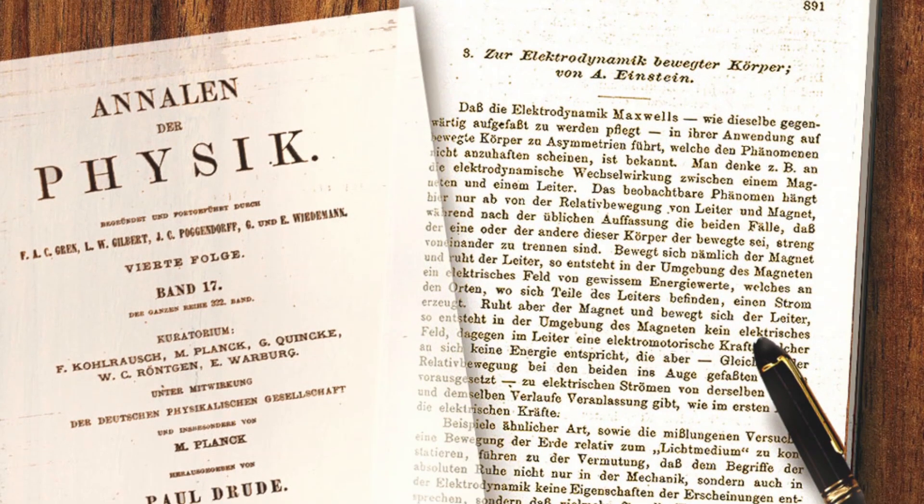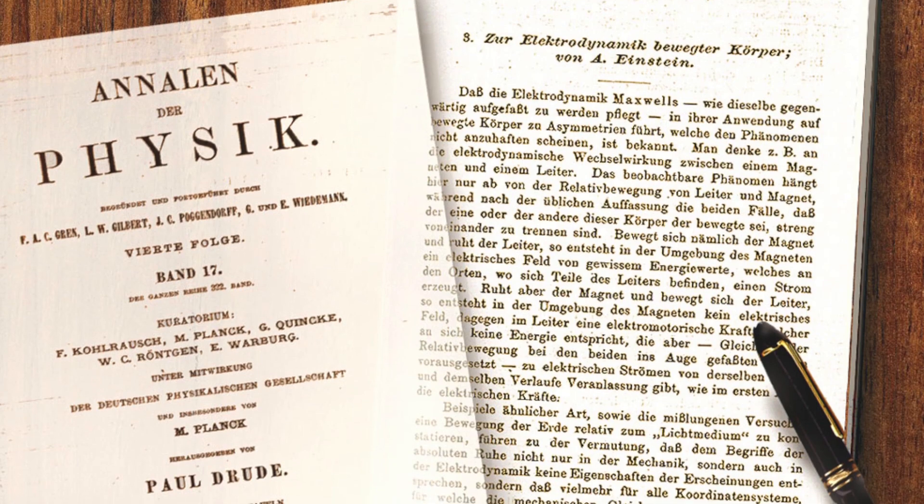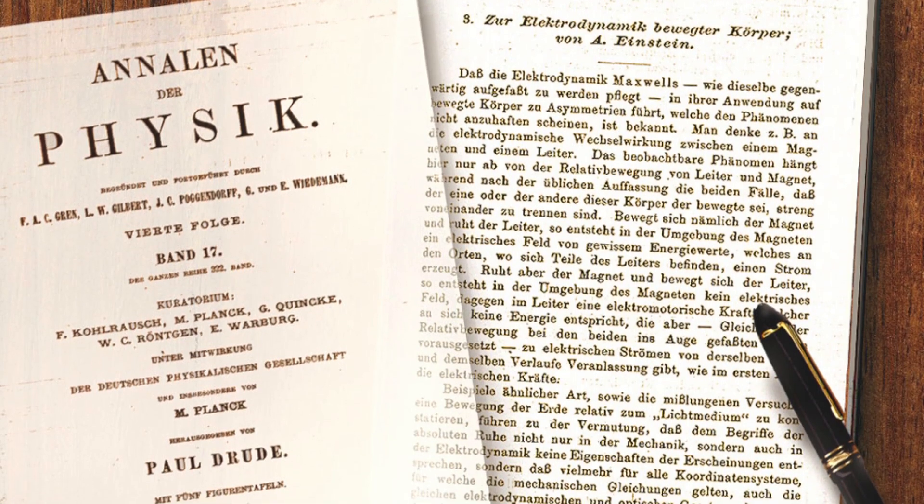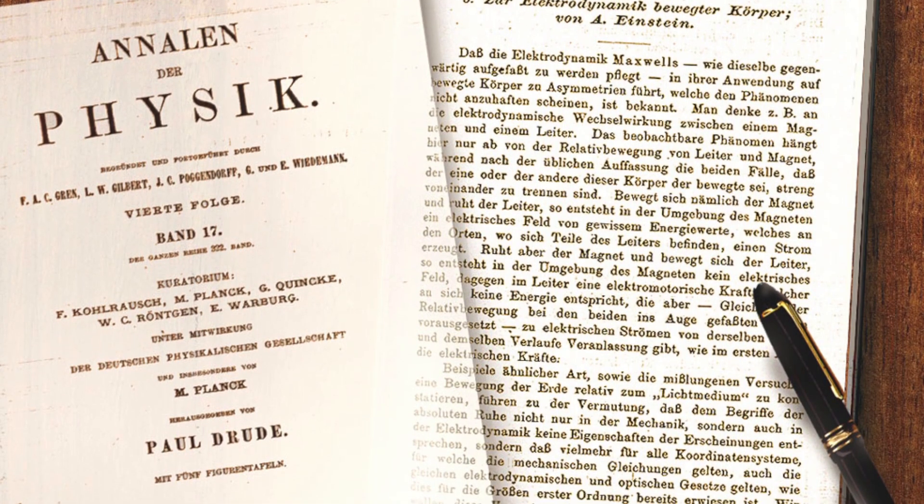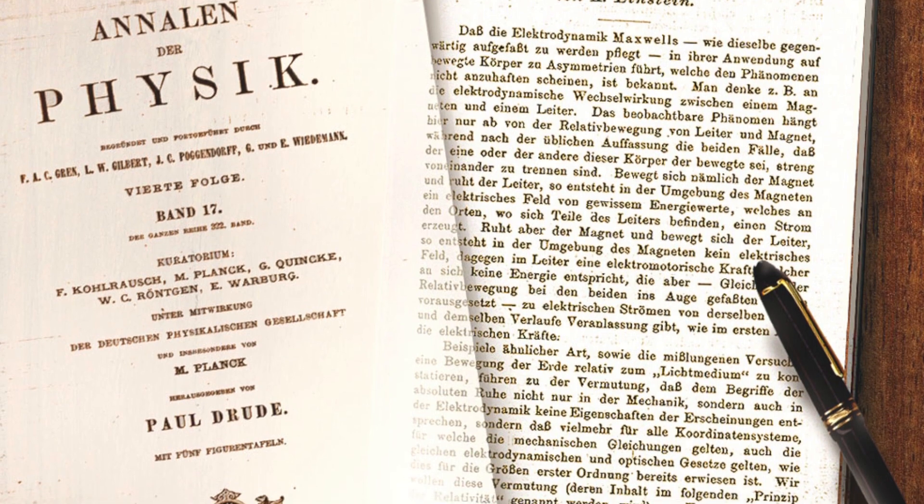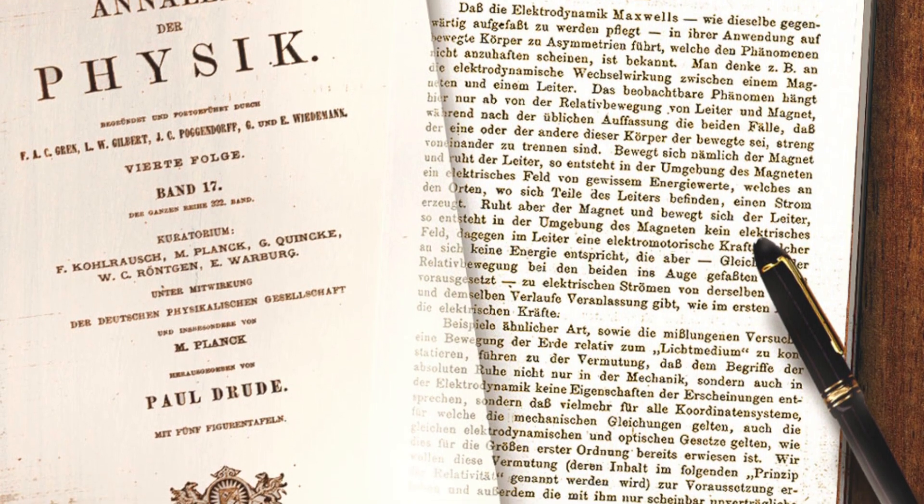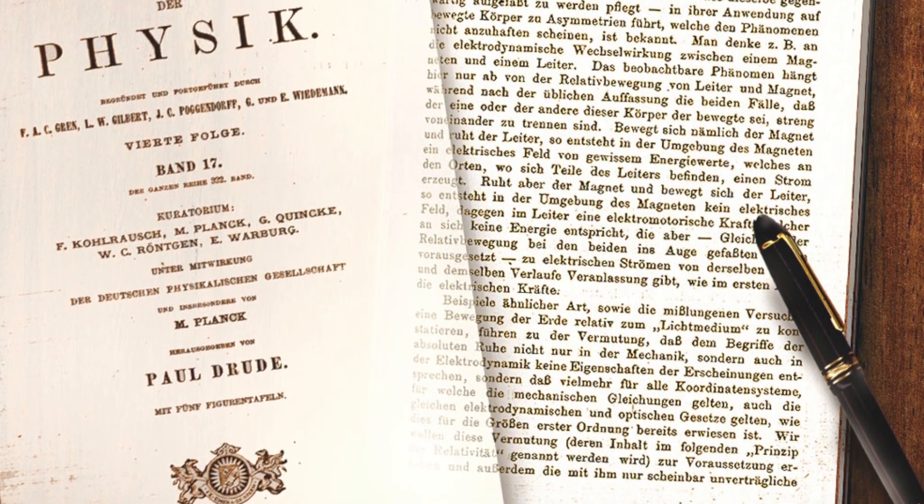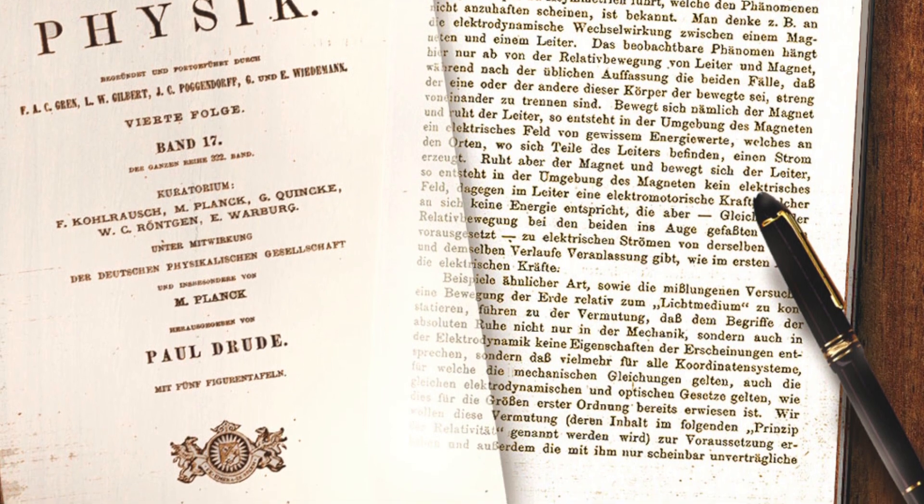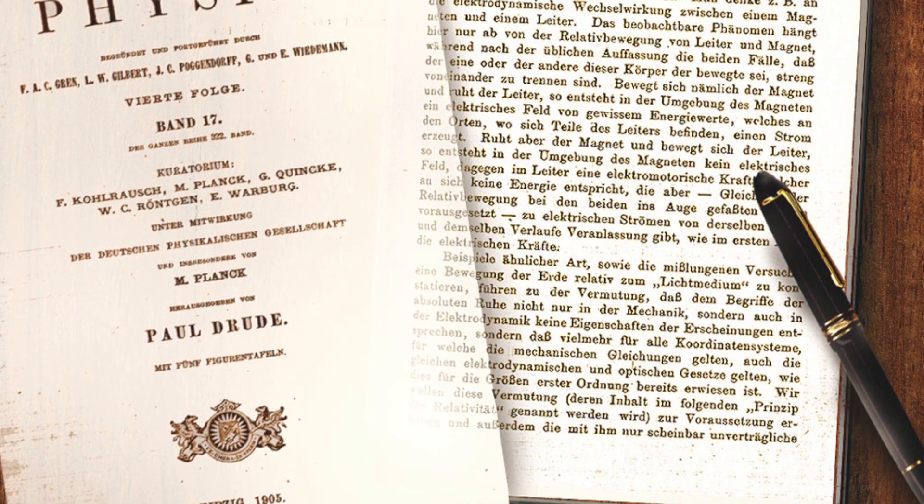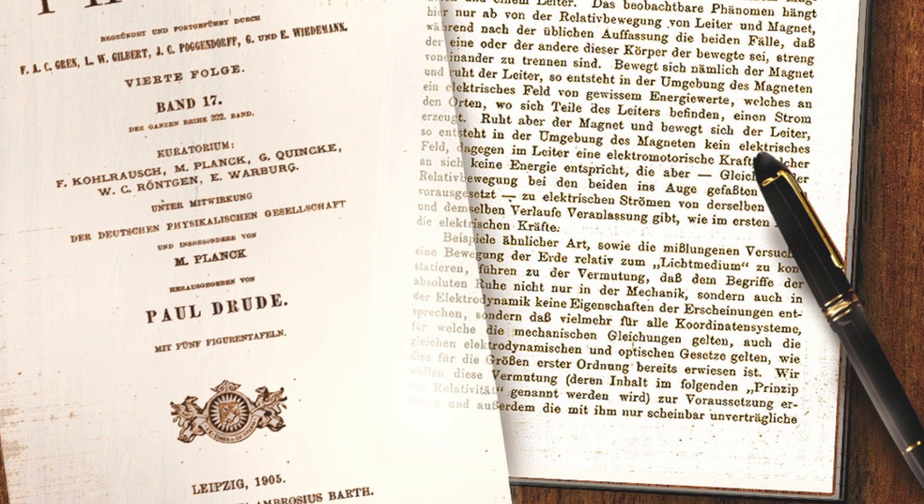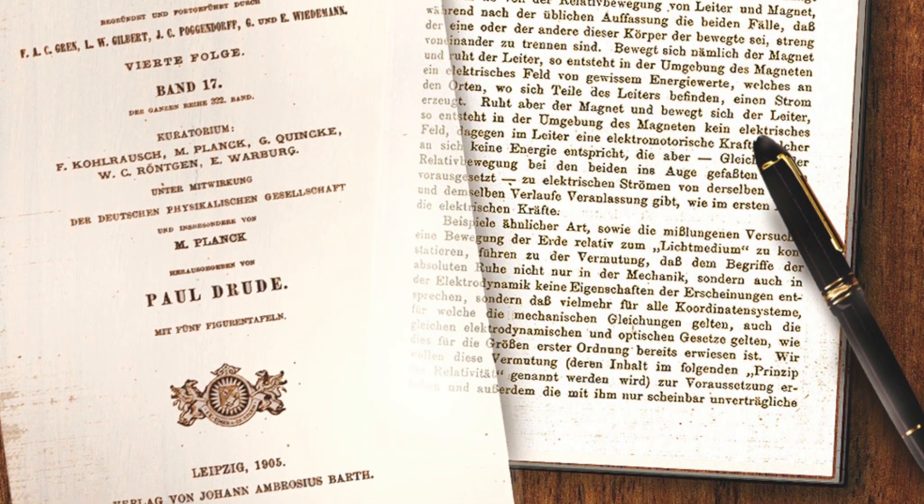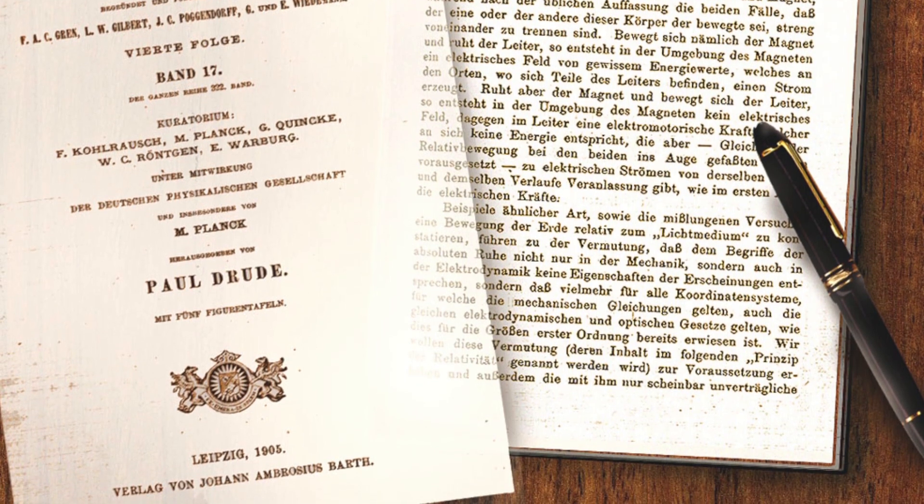When Einstein first published his special theory of relativity in 1905, he was met with criticism. This was a period of time when physicists thought they were nearing the end of their collective careers. They thought everything about classical physics was on the verge of being fully explained. There is just one big question left unanswered. Why is the speed of light constant from all reference frames?